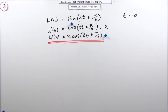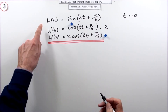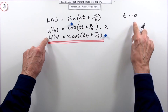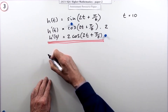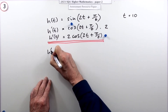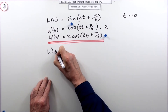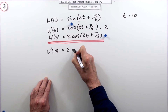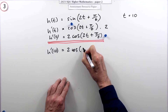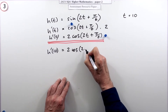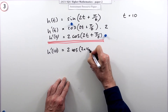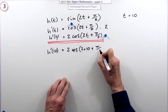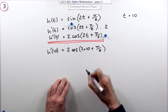Then it says evaluate the rate of change when t is 10, so we want h'(10), which is 2cos(2×10 + π/6).